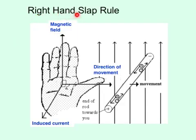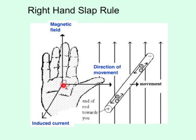This right-hand slap rule will help you determine the direction of the induced current. First, point these fingers upward in the direction of the field lines. The thumb points in the direction of the movement of the conductor — this piece of conductor is being moved that way. Then the palm slaps in the direction of the induced current. In this conductor, the induced conventional current flows that way, but the electron current flows the other way. These positive particles are moving that way; these negative particles, which are electrons, are moving the other way.